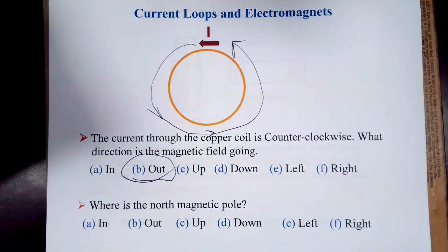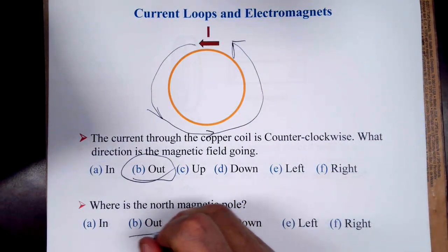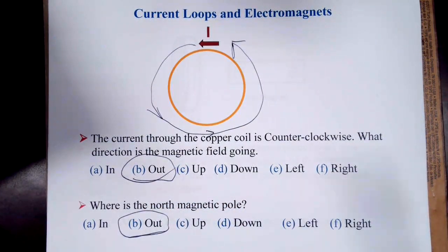Now, which corresponds to the north magnetic pole? If we think about this, the magnetic field lines come out of the north magnetic pole, so if they're coming out of the top of the page here, that means that the north magnetic pole is also out of the page.